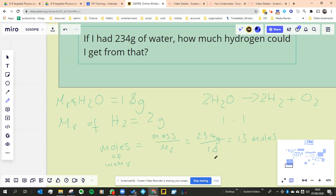Using the balanced equation, we say, therefore, have you come across the three dots before? There's three dots, which means therefore. So therefore, 13 moles of hydrogen.